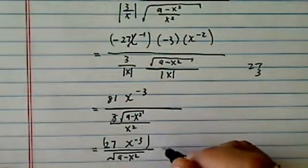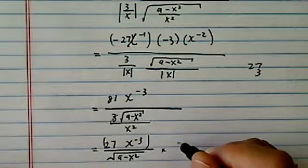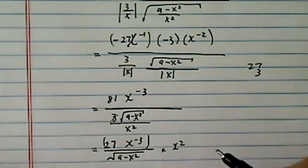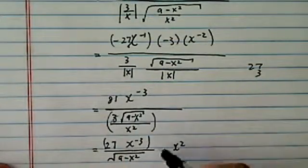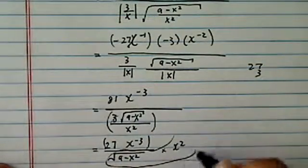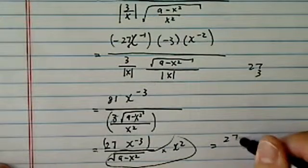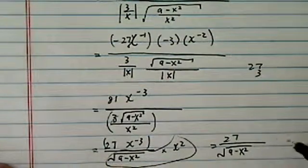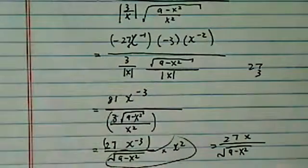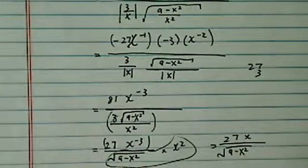Times x squared. The reason is I'm going to multiply basically the reciprocal of this chunk here. So now I have 27 over 9 minus x squared. And then I have x on top. It's a pretty messy one here.